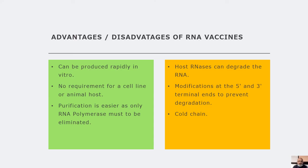There are advantages and disadvantages of RNA vaccines. The most promising advantage is that the vaccine is produced rapidly, can be produced in vitro, and there is very little contamination from accessory proteins. The disadvantage is the degradation of the RNA itself — host RNases can degrade the RNA, and there can be issues with regard to transportation which must be done using a cold chain. Modifications at the 5' and 3' ends of the RNA may be necessary in order to prevent degradation of the RNA by host RNases.